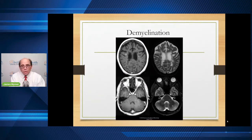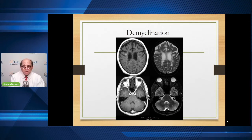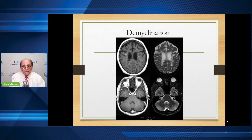I want to show a couple of other slides. This is not cauda equina syndrome — this is multiple sclerosis, which is a demyelinating disease. You can see the white spots in the middle of the brain — those are tiny plaques that affect the myelin. So we see this demyelination in something like multiple sclerosis.